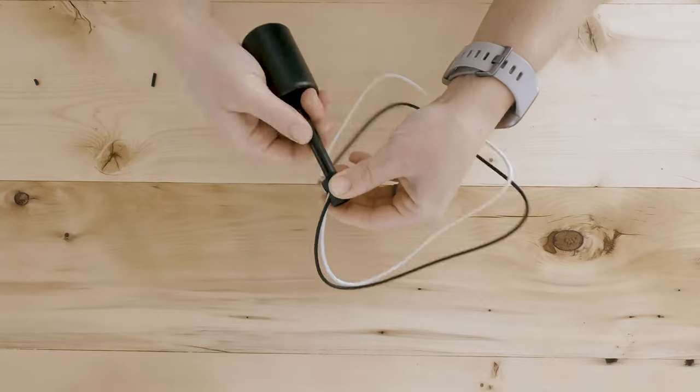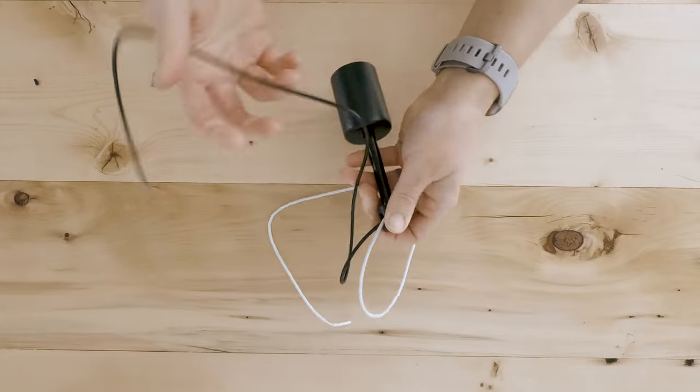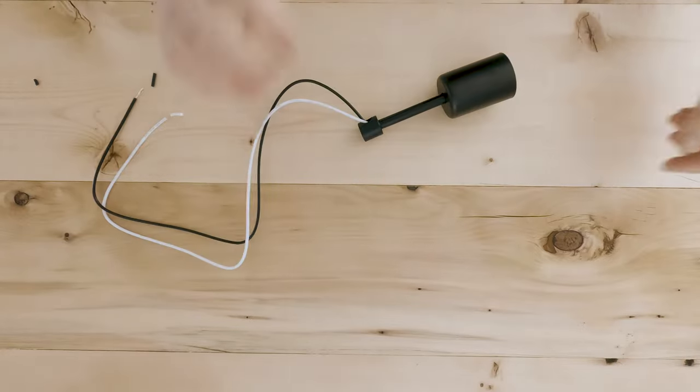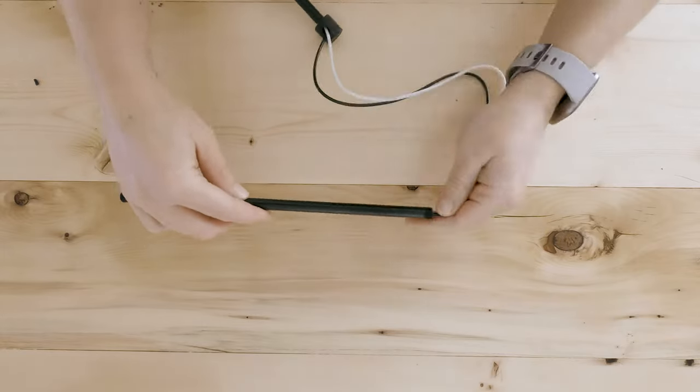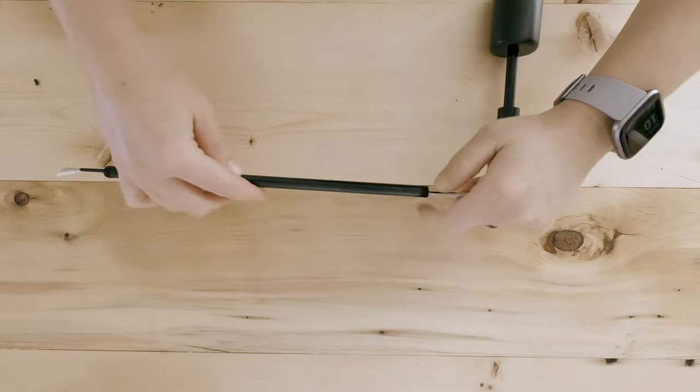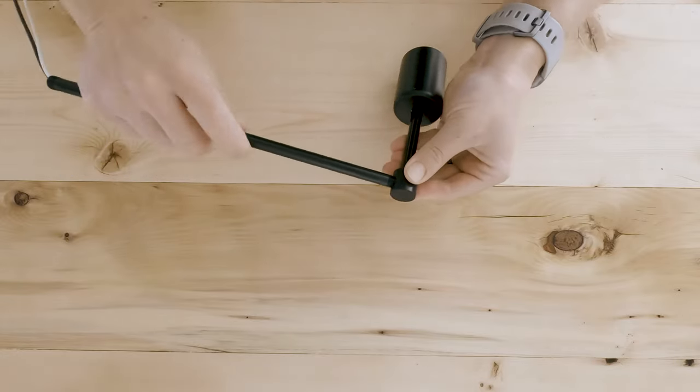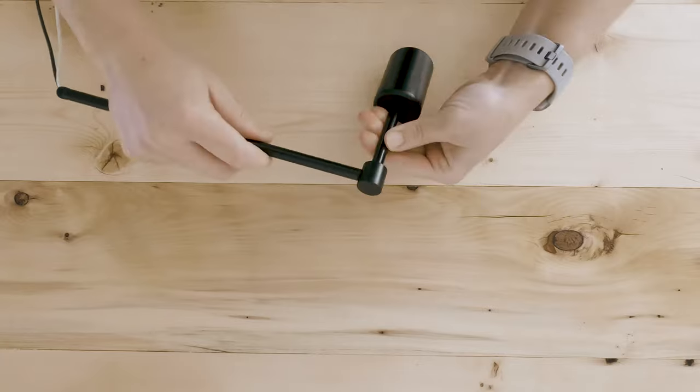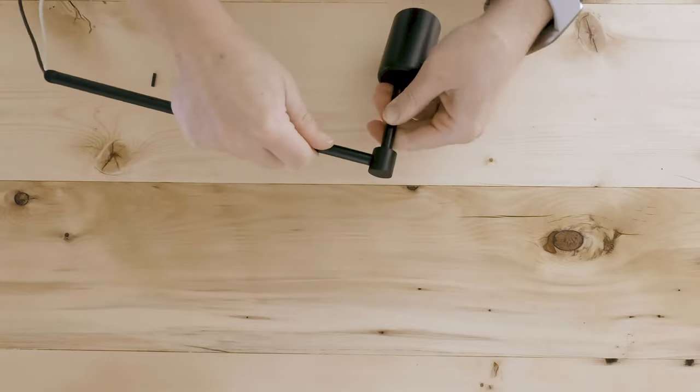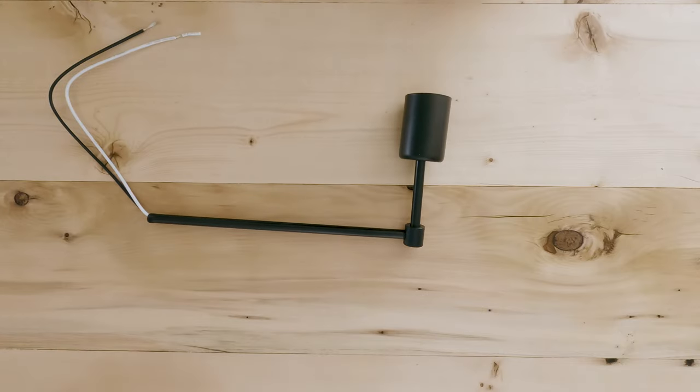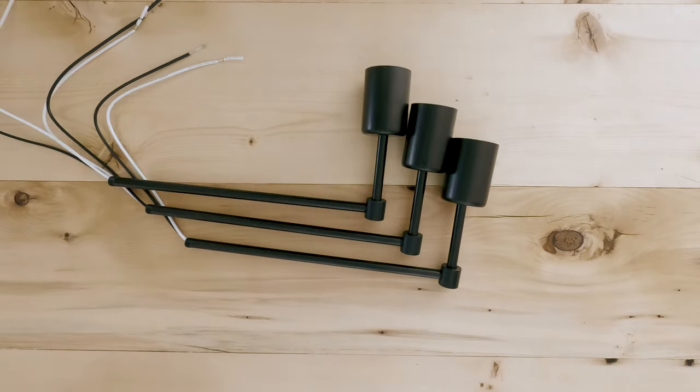You will notice that the wires will start to twist around inside the fitting. Next, take the 10 inch pipe and thread the wire through this pipe. Secure the pipe to the last fitting. Complete this step until you have five total arms for the light.